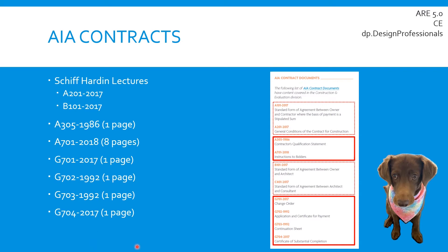We've already studied a good handful of these contracts — we should already know four contracts from previous exams if you've taken Practice and Project Management. So we're just trying to learn these six new contracts: the A305, which is a one-pager and super easy to get through; the A701 at eight pages, which is really the biggest new contract you have to learn; and then the rest are all a single page — very straightforward, very easy to understand. It really should not be too difficult.